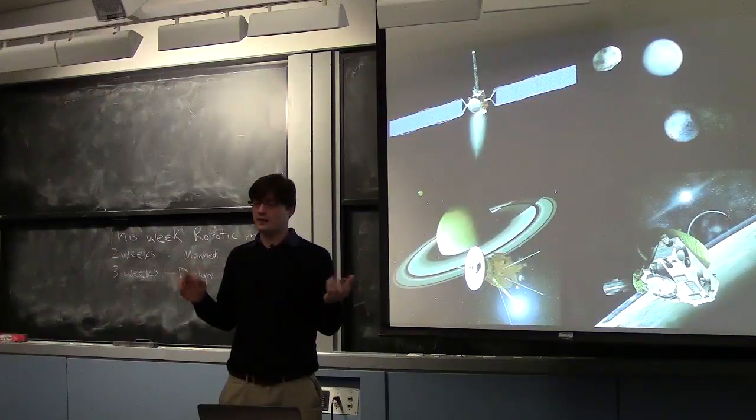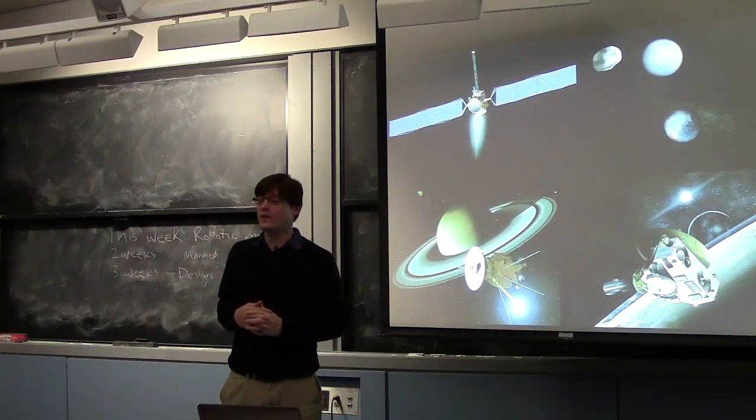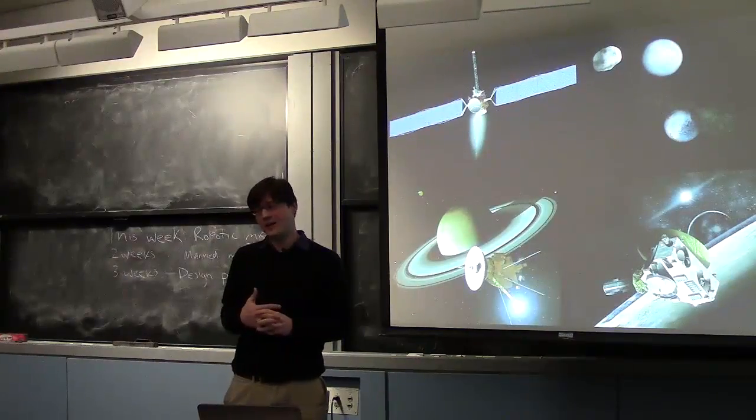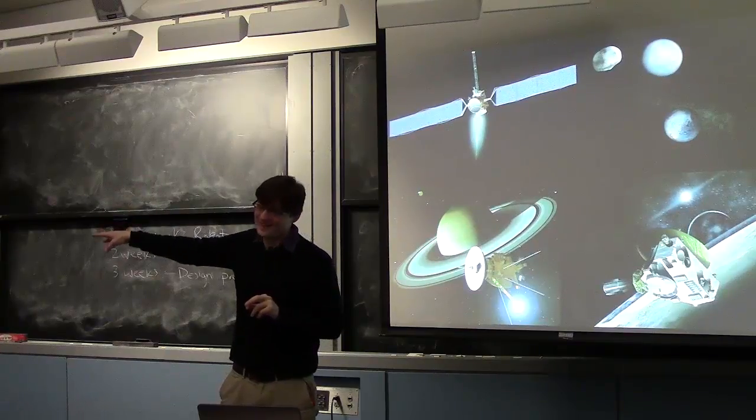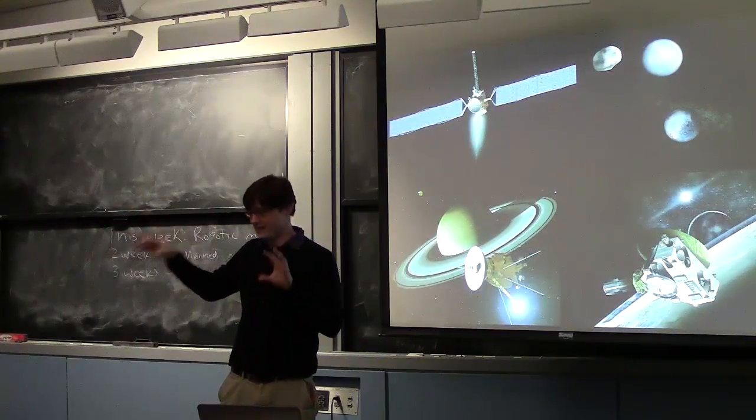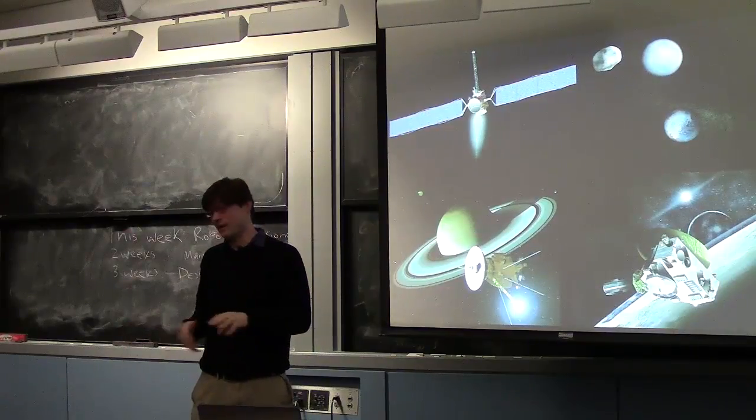Have you guys seen Empire Strikes Back? You know when they're flying through the asteroids and stuff? It's not like that at all, unfortunately. If you were in the asteroid belt, I don't even think you would know it. There's an asteroid here, and then like 100 kilometers away, there's another asteroid. The asteroid belt is not dense like that. There may be asteroid belts that are, but not in our solar system.